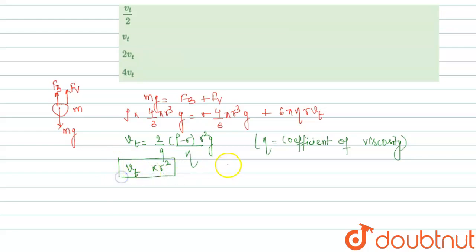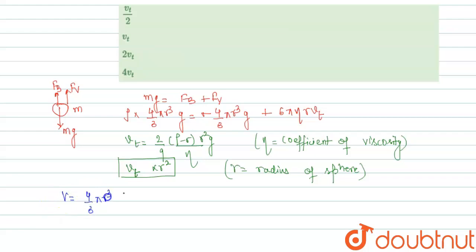Now, according to the question the volume becomes 8 times. The formula for volume is (4/3)π r³, so volume is directly proportional to r³. Initially volume is V and the final volume is 8V.